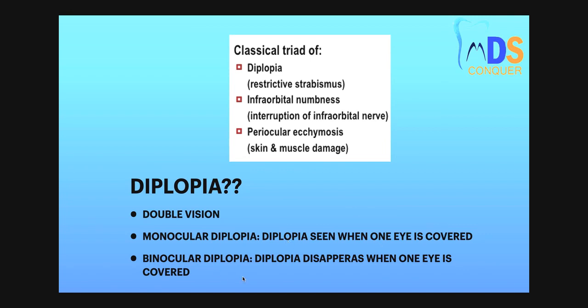In case of binocular diplopia, the diplopia disappears when one eye is covered. With both eyes open, the patient can see the diplopia, but when one eye is closed, diplopia resolves in case of binocular diplopia.